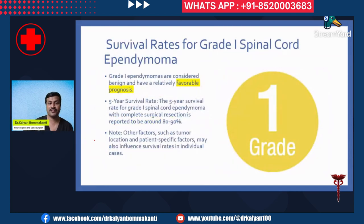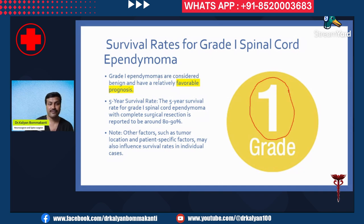Let us look at survival rates for each grade of tumor. Grade one ependymomas are considered benign and have a relatively favorable prognosis. The five-year survival rate for grade one spinal cord ependymoma with complete surgical resection is reported to be 80 to 90 percent. Other factors such as tumor location and patient-specific factors may also influence survival rates in individual cases.